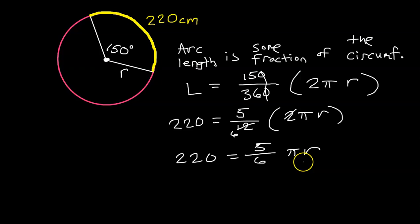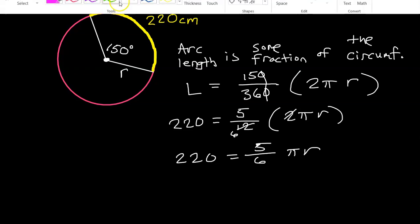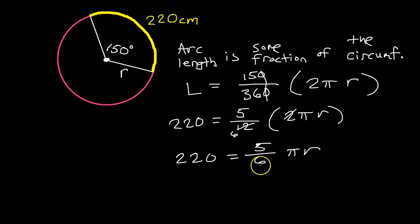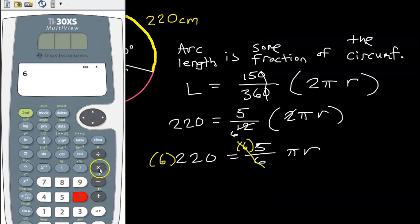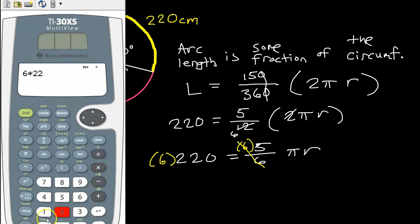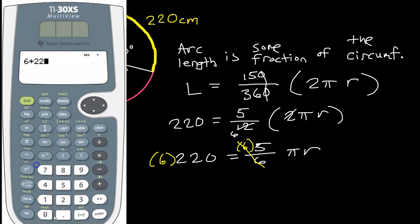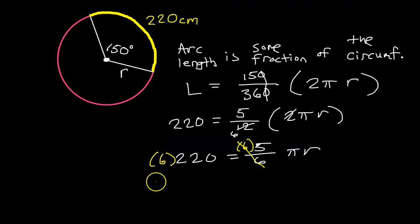So I just need to get r by itself. So one easy way to do that will be, let's see, I need some more colors in here. If I multiply by the denominator to get rid of the 6, so imagine that I multiply by 6 right here, and I will multiply by 6 over here. So that way, these 6's cancel each other out. Okay, what is 6 times 220? Let's go ahead and do 6 times 220. So that's 1,320. So I have 1,320.